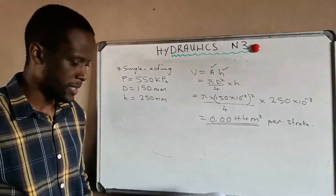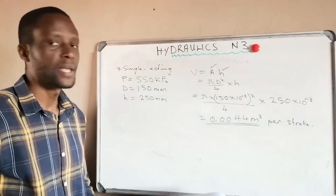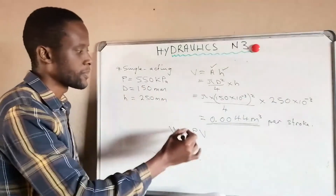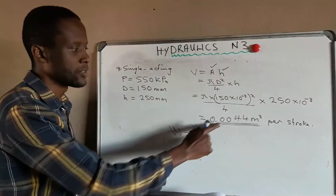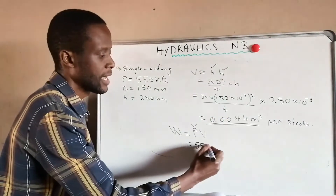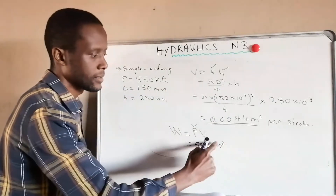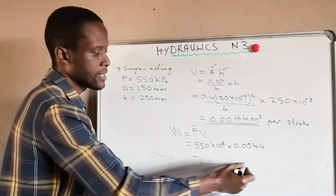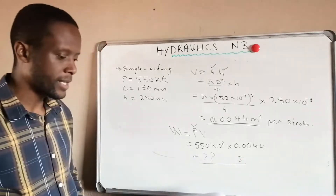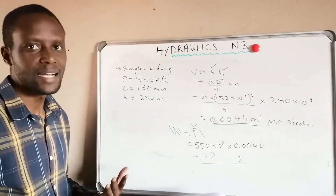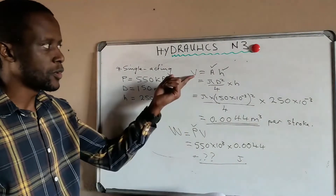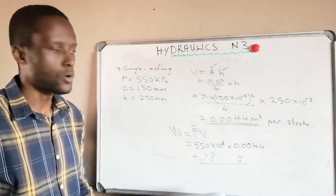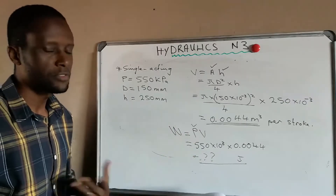For the work done during the delivery stroke: work done equals pressure times volume. We have pressure of 550 kilopascal — that is 550 × 10³ — multiplied by our volume of 0.0044 cubic meters, giving our answer in joules. Work done is always in joules. If they provide a time, divide the work done by time to get power.